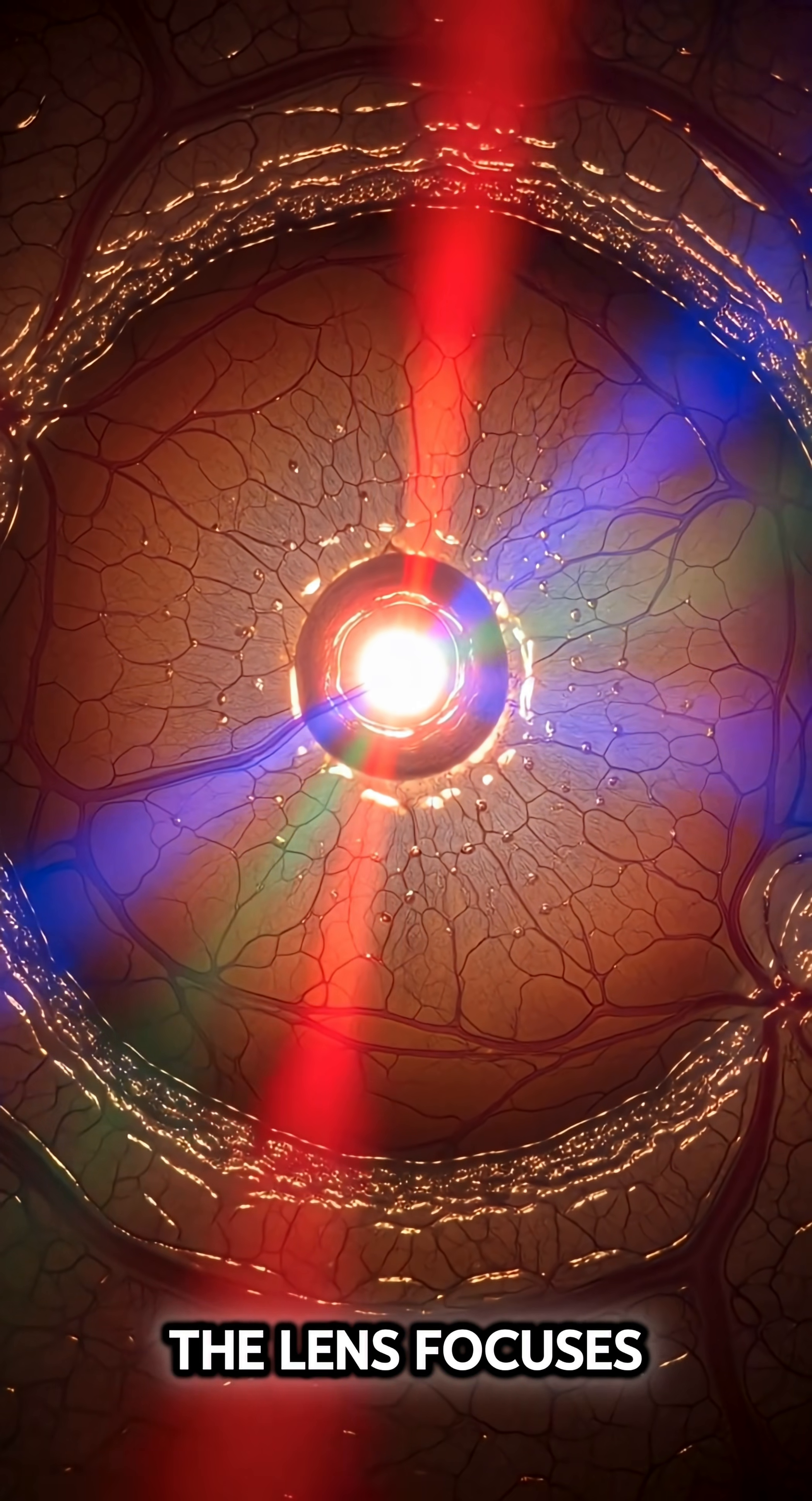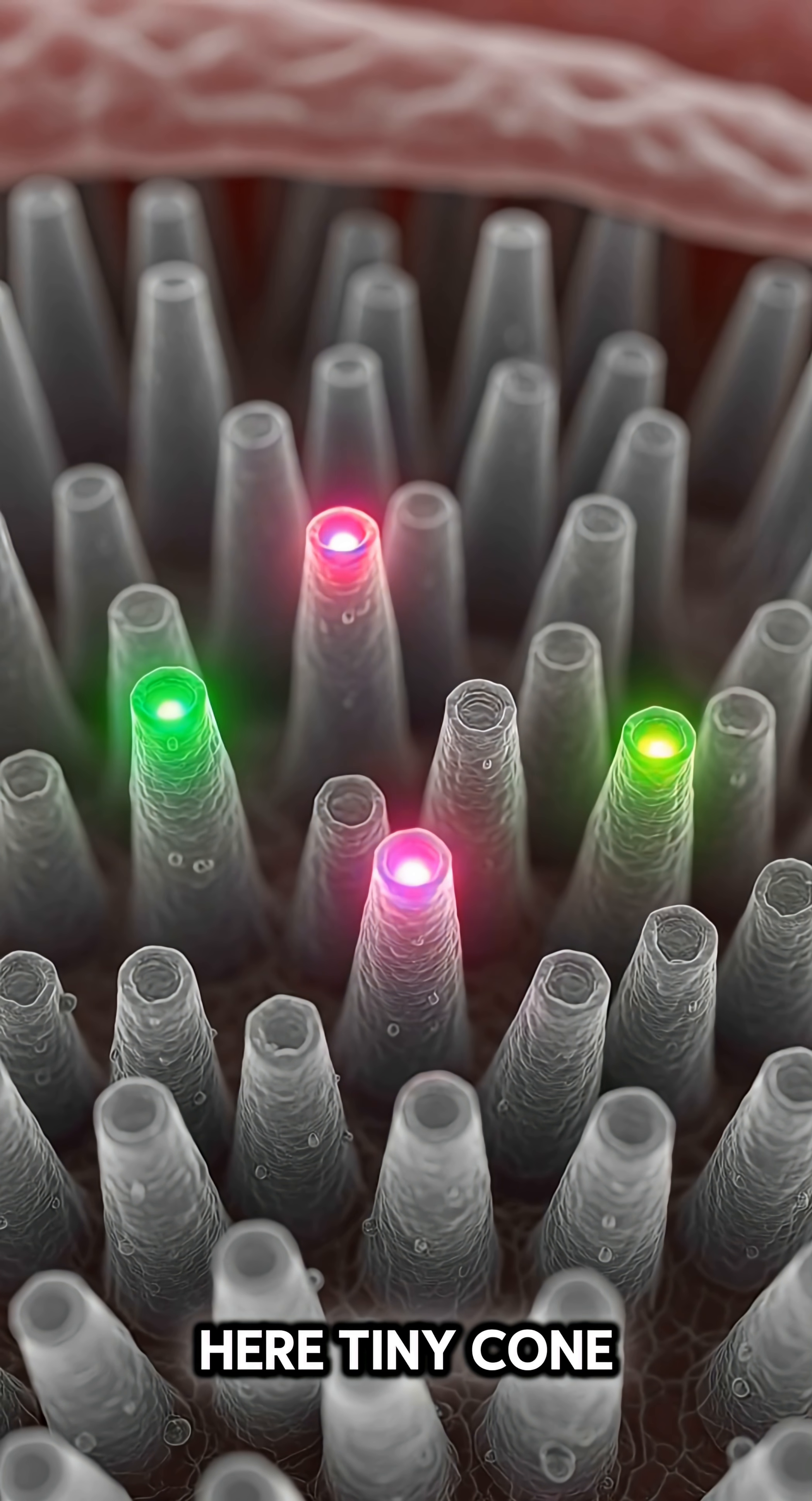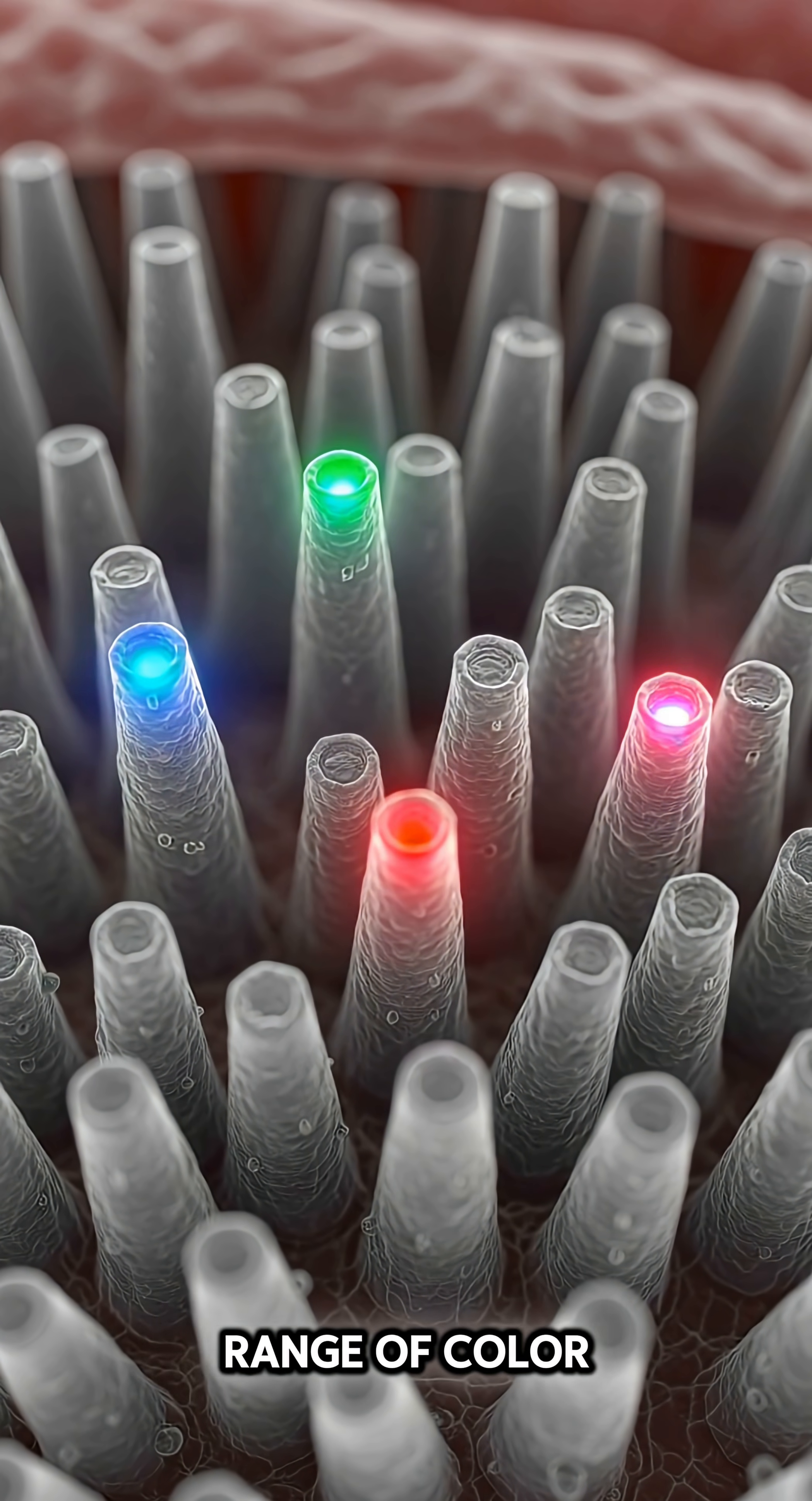The lens focuses each beam onto the retina, a thin surface ready to capture light. Here, tiny cone cells wait, each tuned to detect a specific range of color.